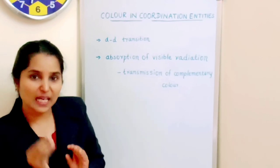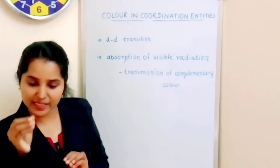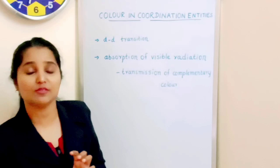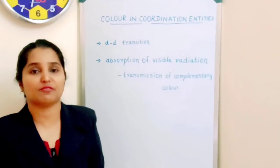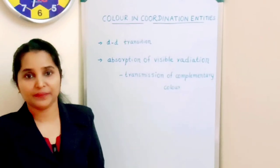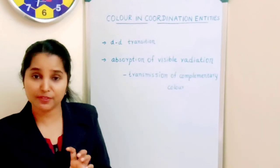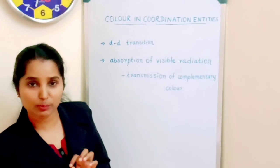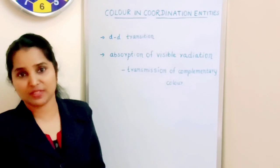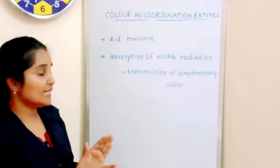Electrons can jump from those unpaired electrons can jump from the lower level to the higher level during the acceptance of a certain amount of energy. That is what is d-d transition. They can jump from one set of d orbitals to the other higher state of d orbital. That is known as d-d transition.